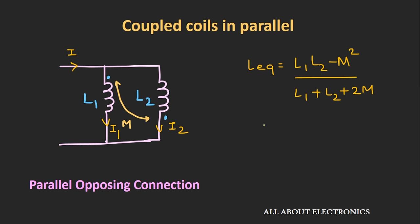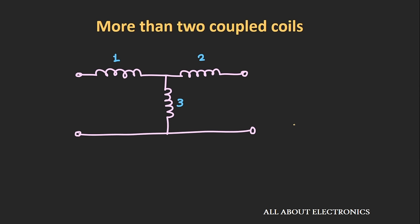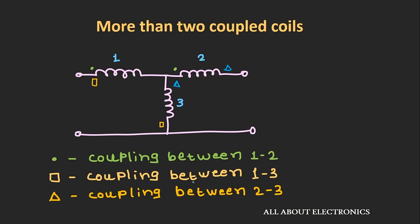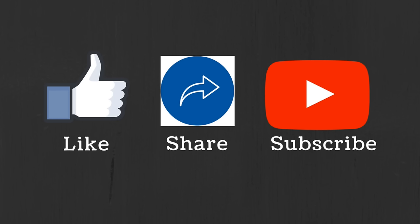If you want me to derive the expressions for these series and parallel combinations, please let me know in the comment section below. So far we had seen only two coils coupled together. If more than two coils are coupled — for example, three coils 1, 2, and 3 — we need to use different dot symbols to represent each mutual coupling. Round dots represent coupling between coils 1 and 2, square dots for coils 1 and 3, and triangular dots for coils 2 and 3. I hope you understood dot convention in a magnetically coupled circuit. We will see more examples in upcoming videos. If you have any questions, please comment below, like the video, and subscribe to the channel.